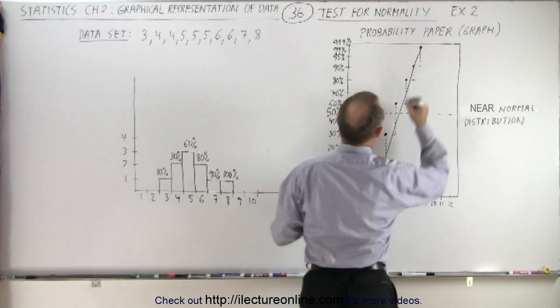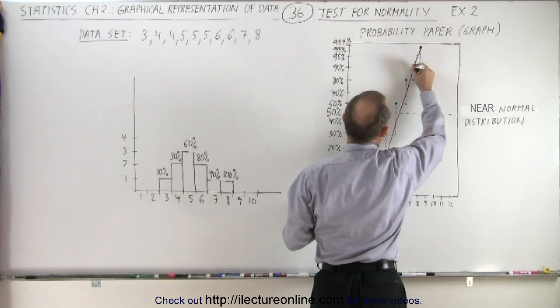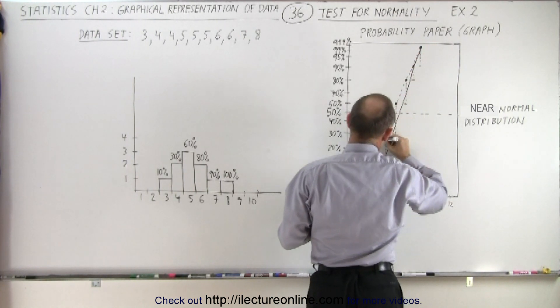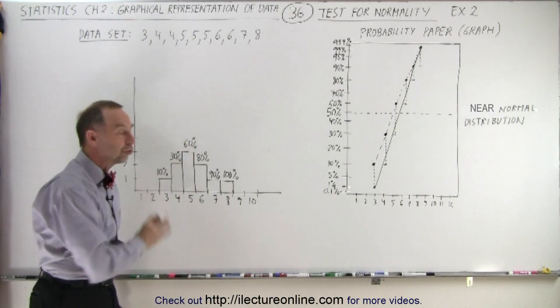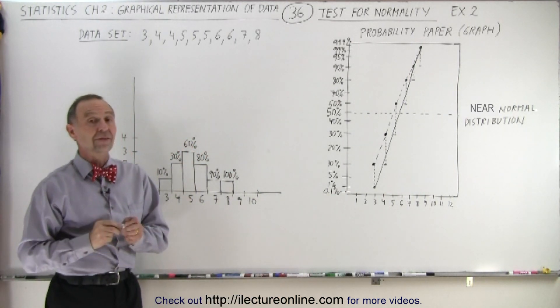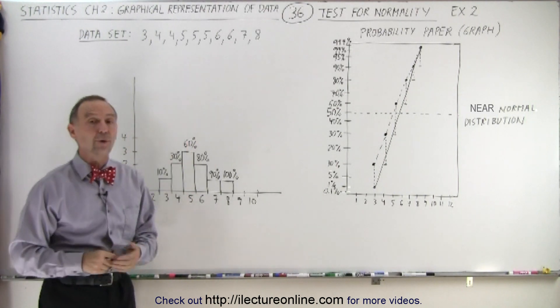You can see since we're very close here, the data points do not deviate very far from that diagonal line, which indicates you're close to a normal distribution. And that is how we do the test for normality.